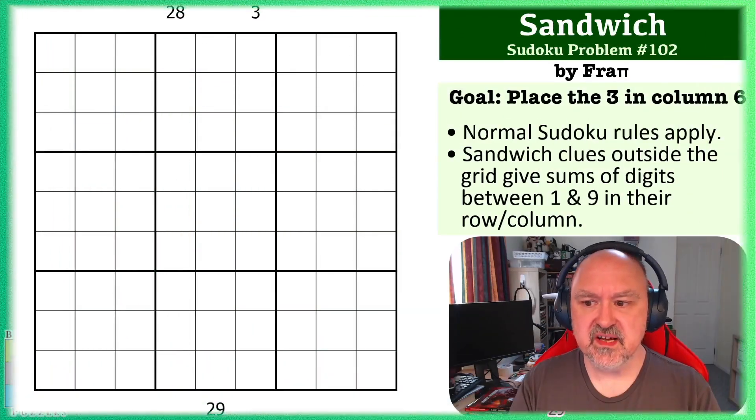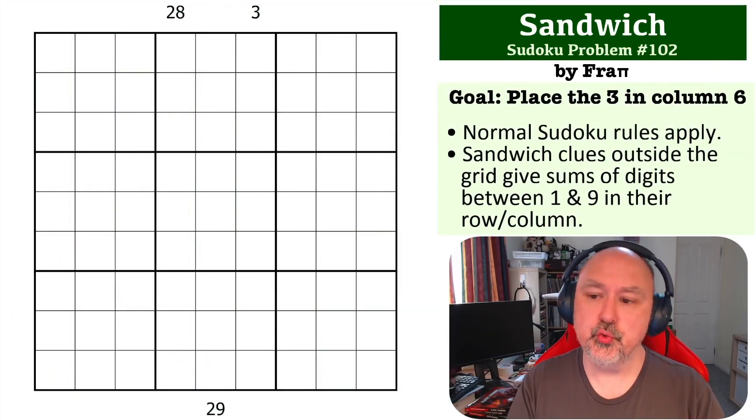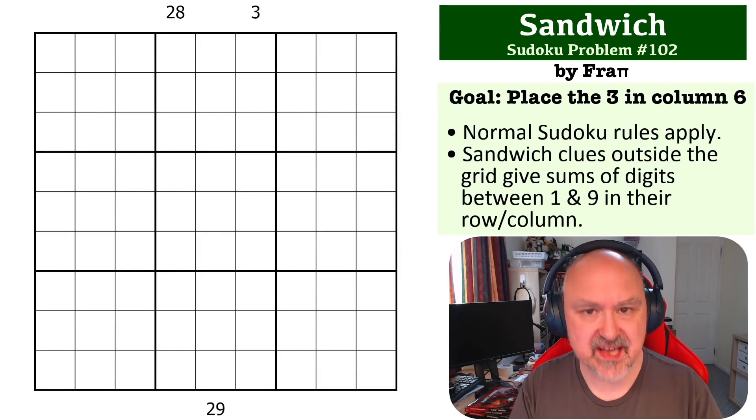Hey everyone, this is Bremster and this is number 102 in the Sudoku Problem series. This is a Sandwich problem submitted by Frappi and the goal is to place the three in column six. We're starting to get some different stuff here and I really like it.